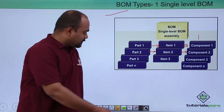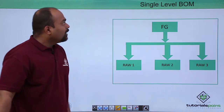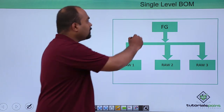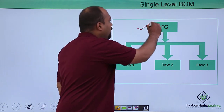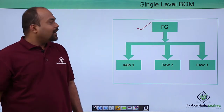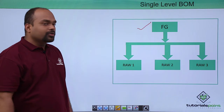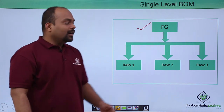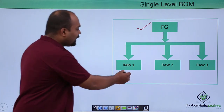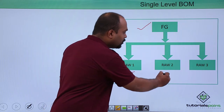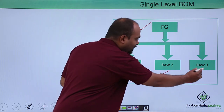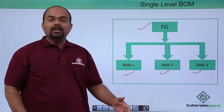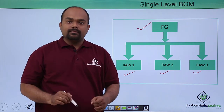In a single level BOM, there is one finished good, and to manufacture that finished good, raw material 1, raw material 2, and raw material 3 are required. So this is nothing but a single level BOM.